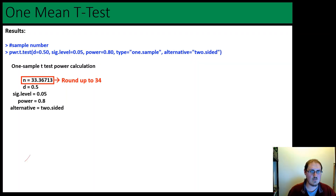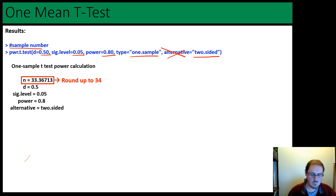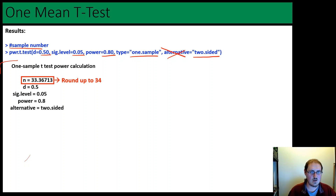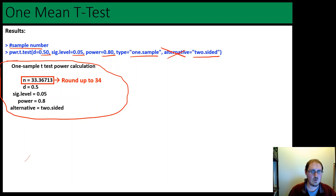Here's what the R code looks like. We have power.t.test with our effect size 0.5, significance level defaulted to 0.05, and power defaulted to 0.8, then type equals 'one.sample', and alternative equals 'two.sided'. Once again, if you didn't specify that it would just default to two-sided. The output shows a one-sample t-test power calculation and the sample size is 33.36, so we'll round up to needing a total of 34 samples to test if body temperature is any different.